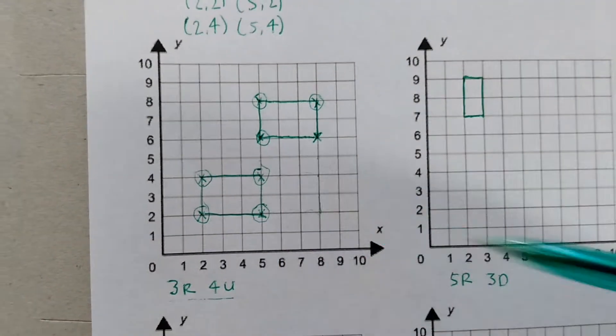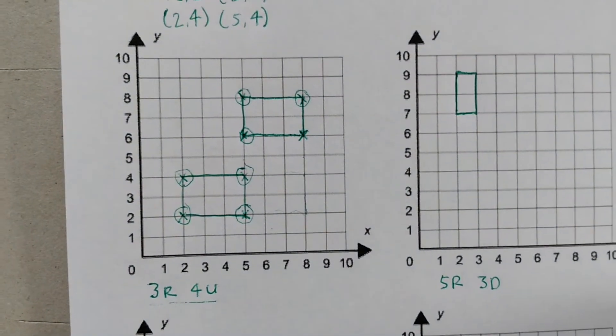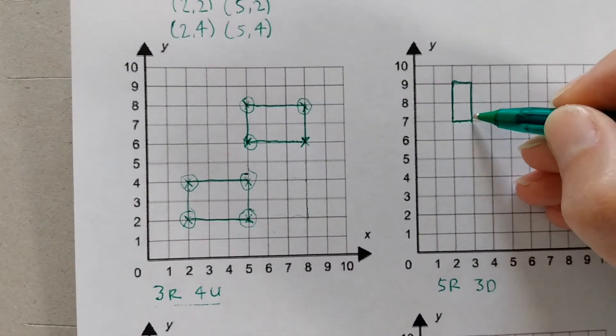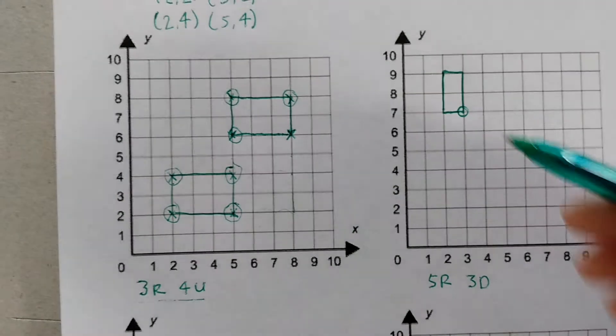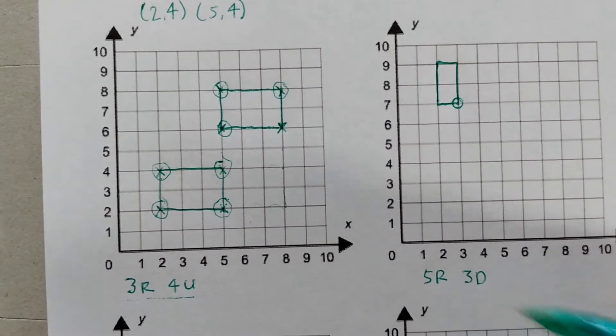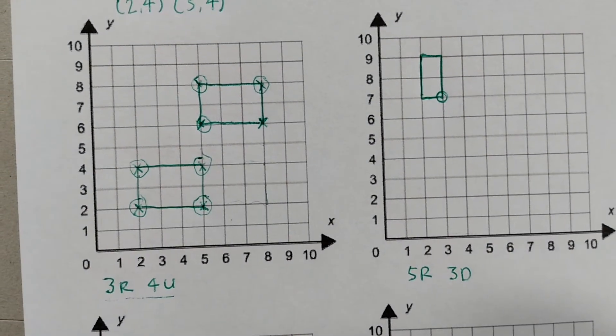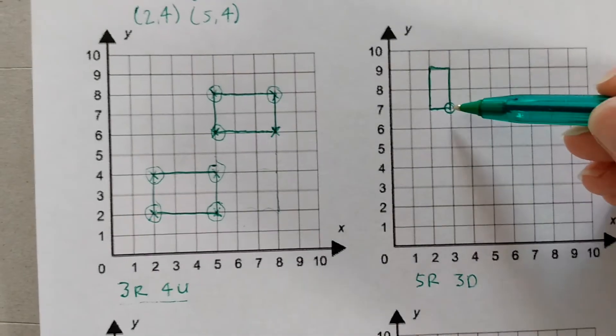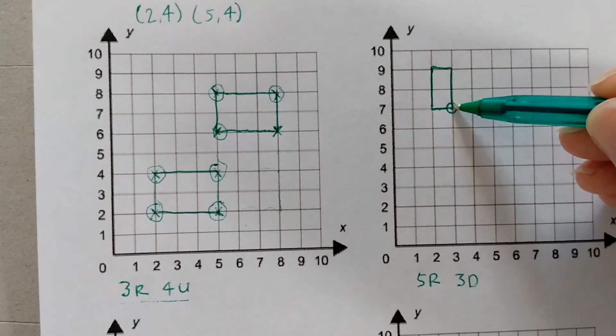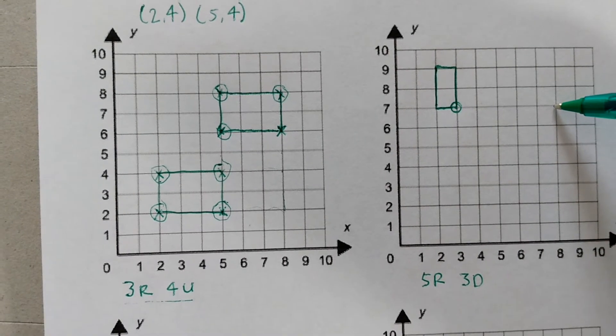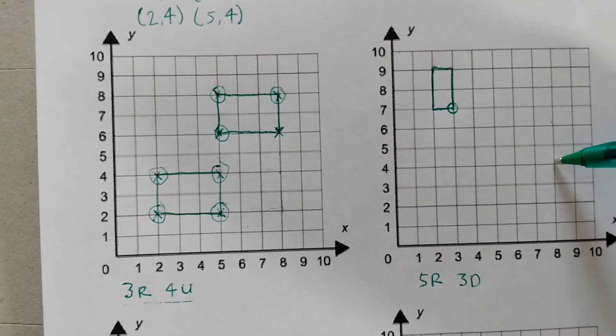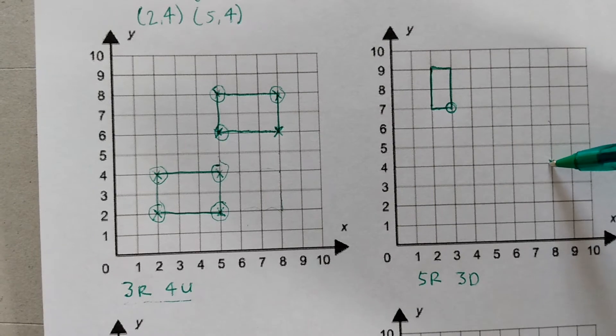Now just like before we're going to choose one coordinate point to try first. And again I'm going to choose this bottom right guy because he was really helpful last time. I'm going to move him 5 right and 3 down, and then see if the others follow. 5 right and 3 down. 1, 2, 3, 4, 5. 1, 2, 3. So he's going to end up down there.